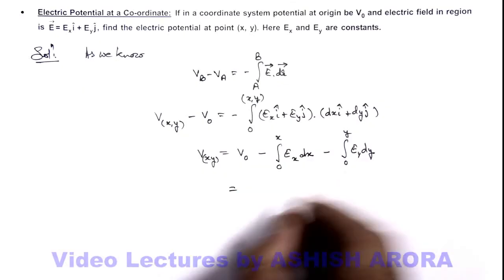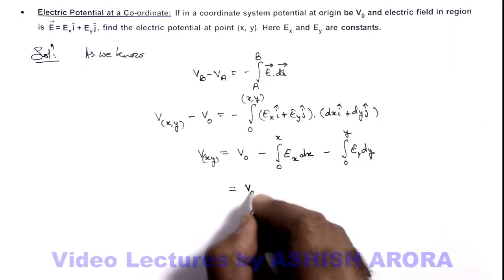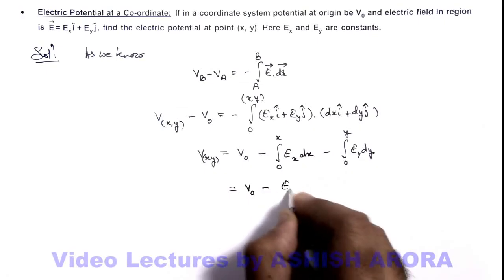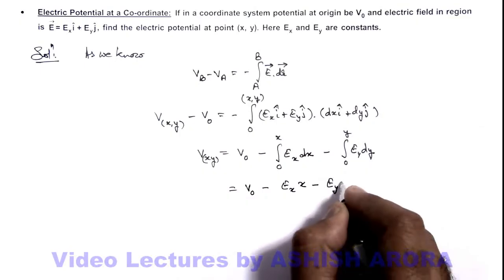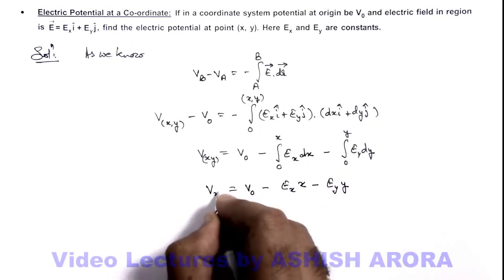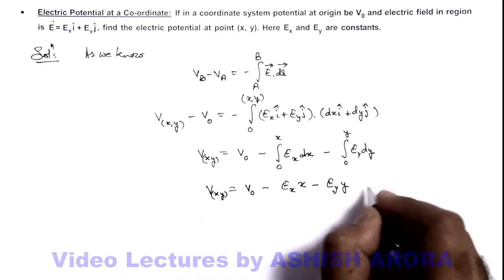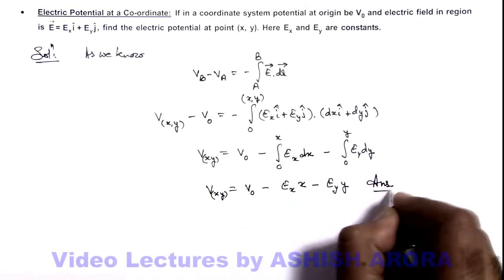So further analyzing, I am getting the result to be V₀ minus Ex times x minus Ey times y. So that will be the potential at a general coordinate (x, y) and that will be the answer to this problem.